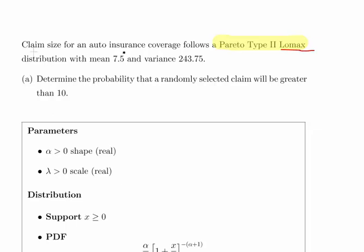Claim size for an auto insurance coverage follows a Pareto Type 2 Lomax distribution with a mean of 7.5 and a variance of 243.75. Determine the probability that a randomly selected claim will be greater than 10.